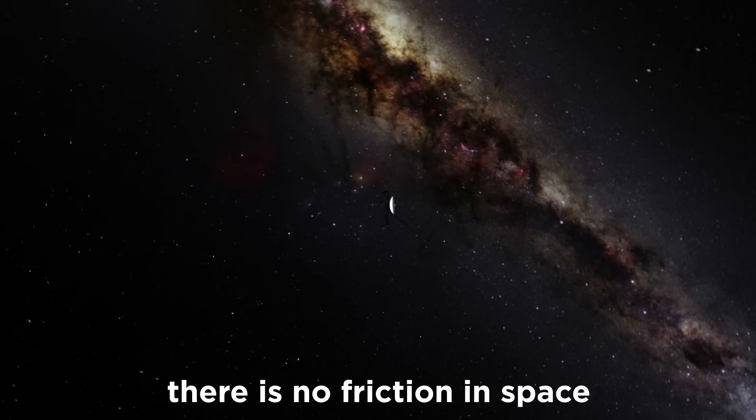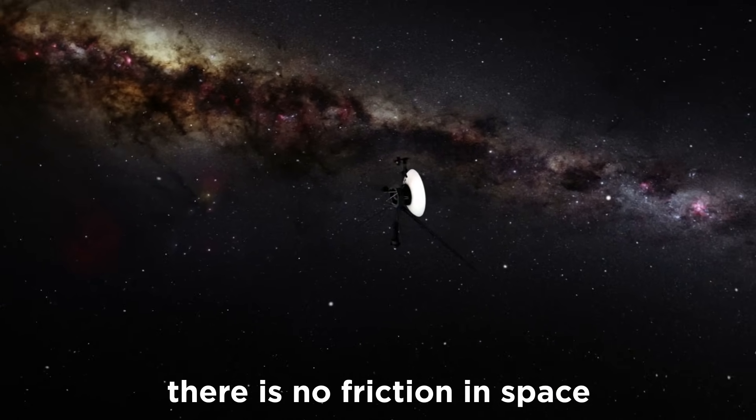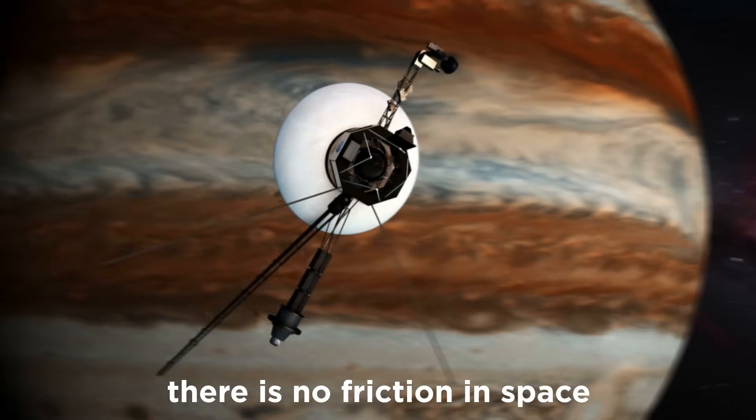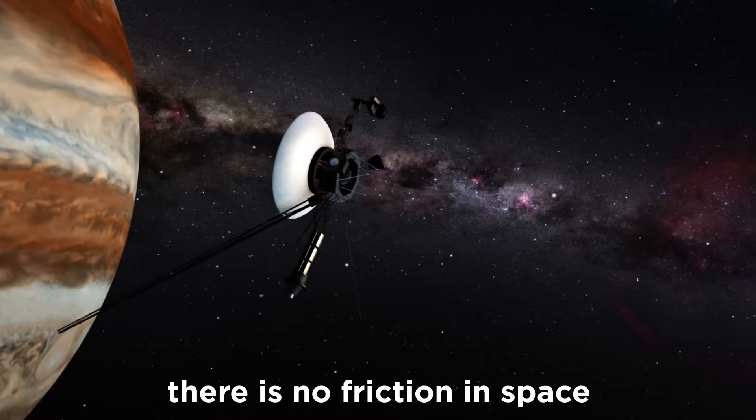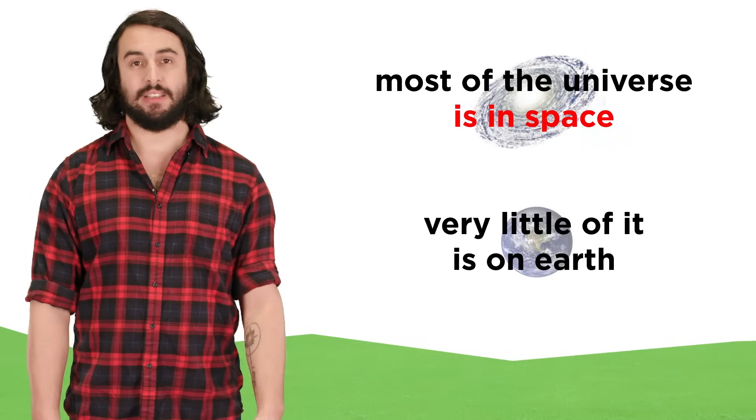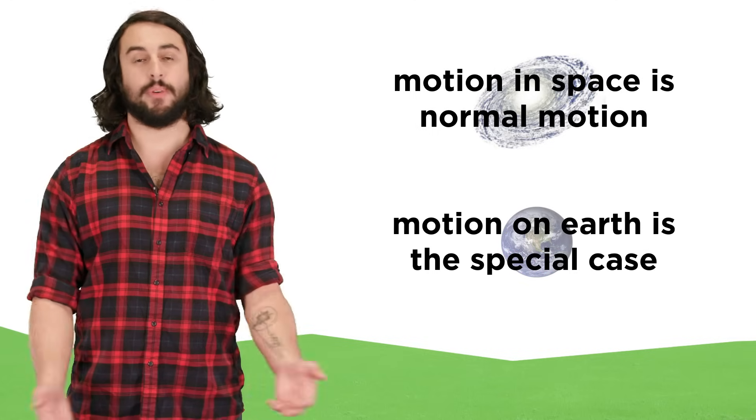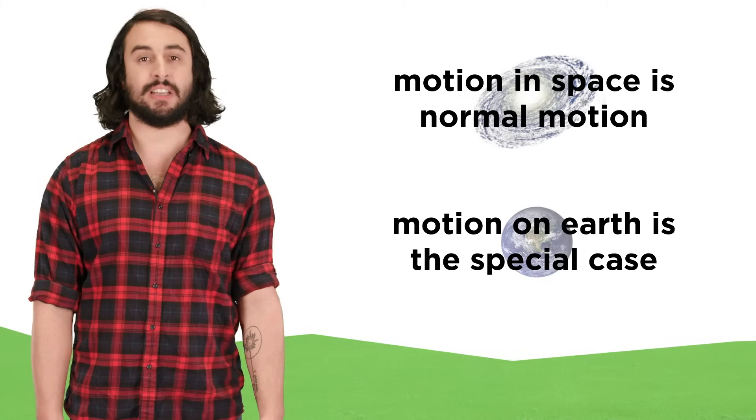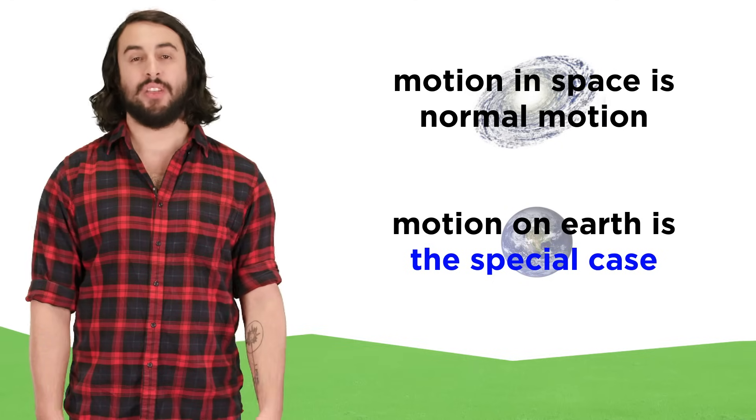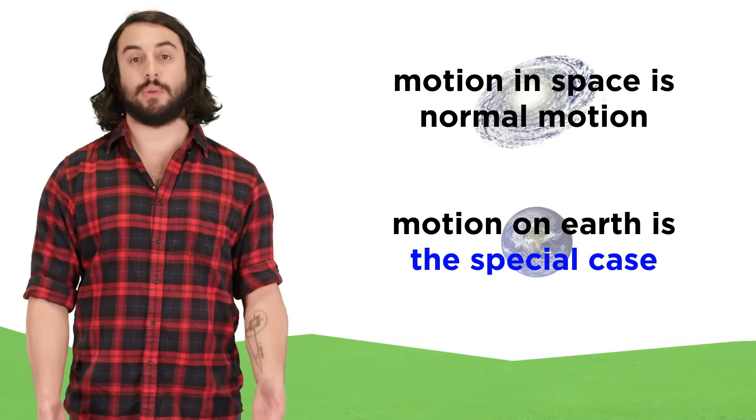This is the kind of motion that can be seen in the vacuum of space. Stars and planets and asteroids and satellites, these objects have roughly constant velocity, and they never stop moving. As it happens, most of the universe is in space, and very little of it is on Earth. So we should consider motion in space, where there is no friction and no wind resistance, to be normal motion. It is motion within Earth's atmosphere that is the special case, where objects are subjected to a variety of variables.